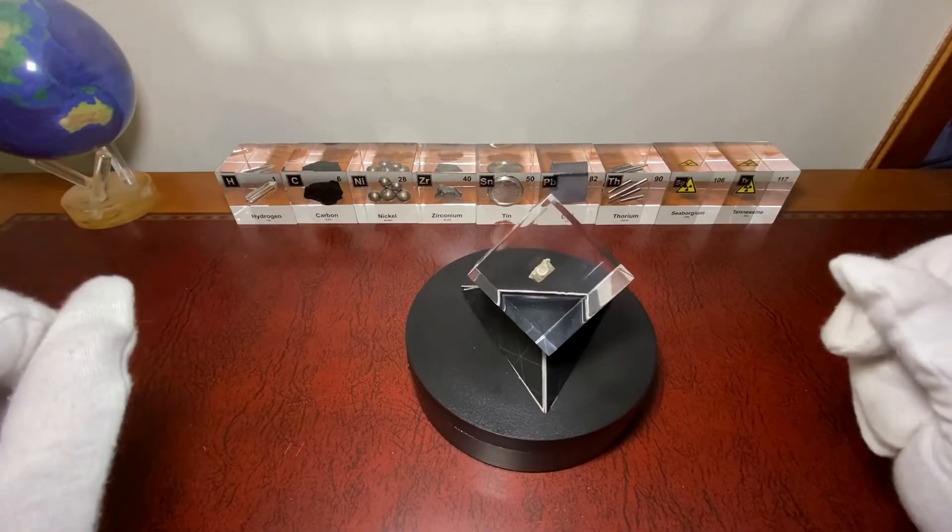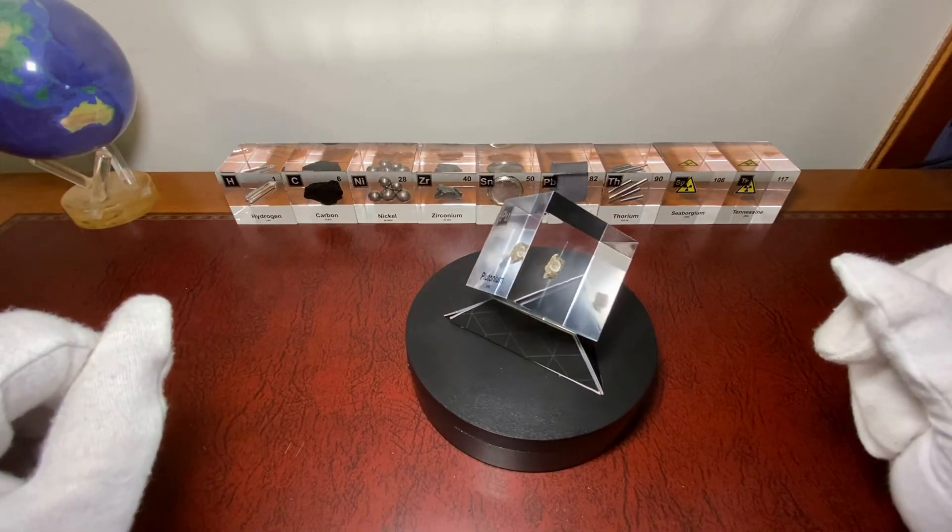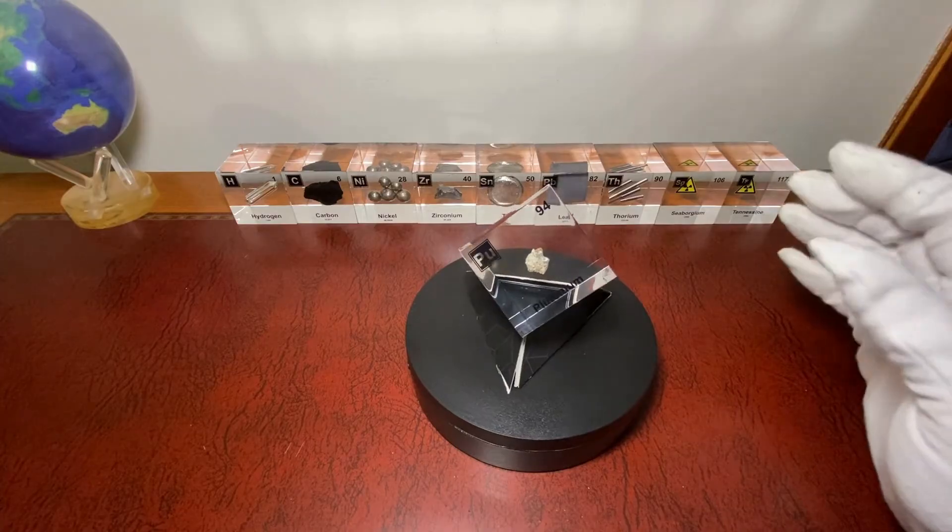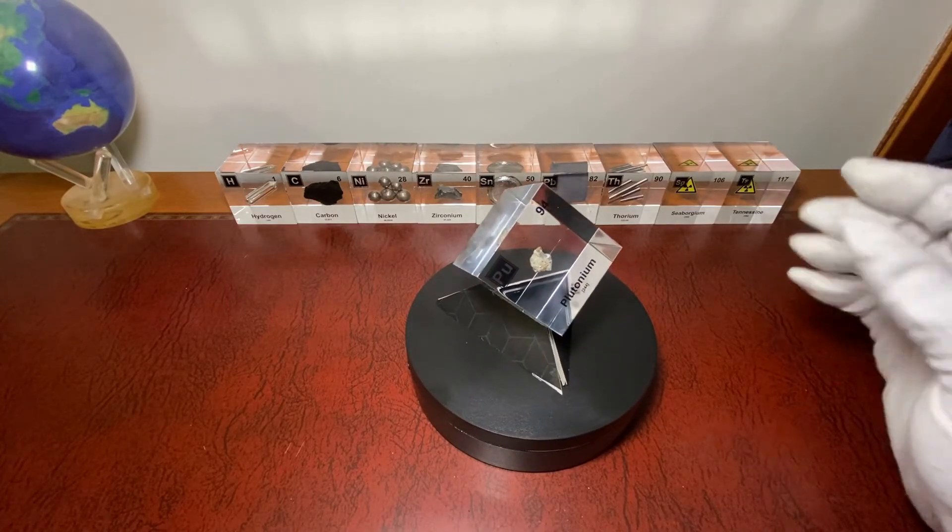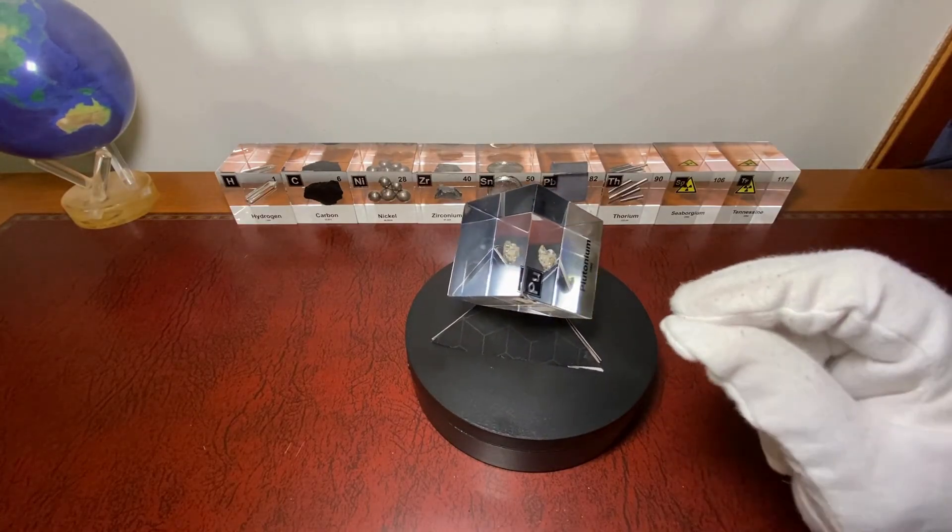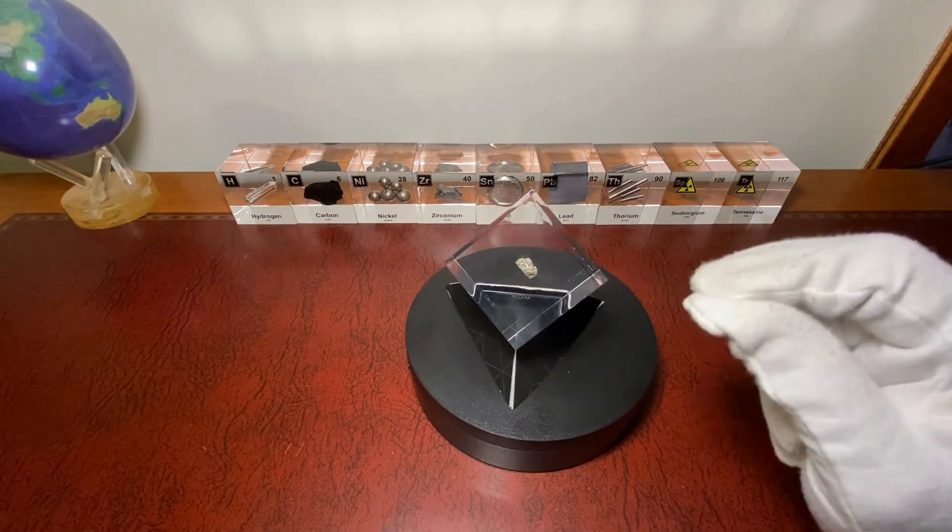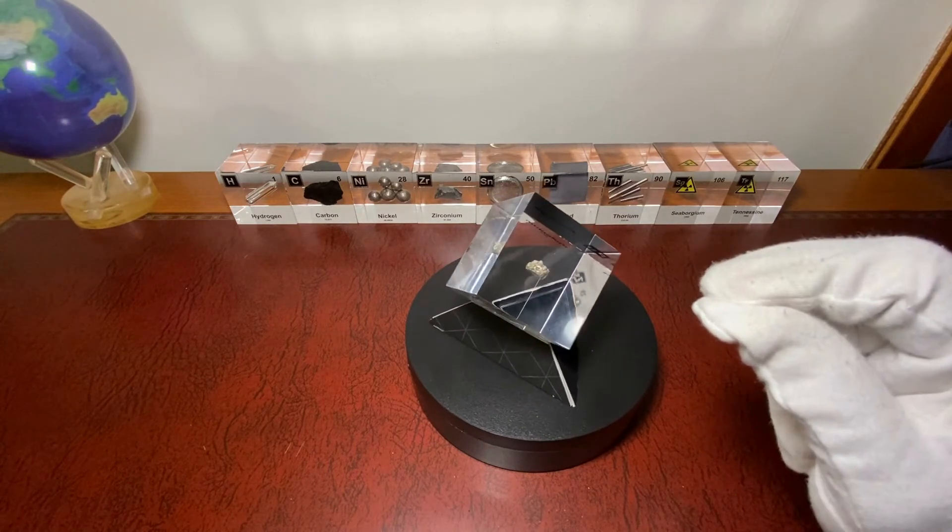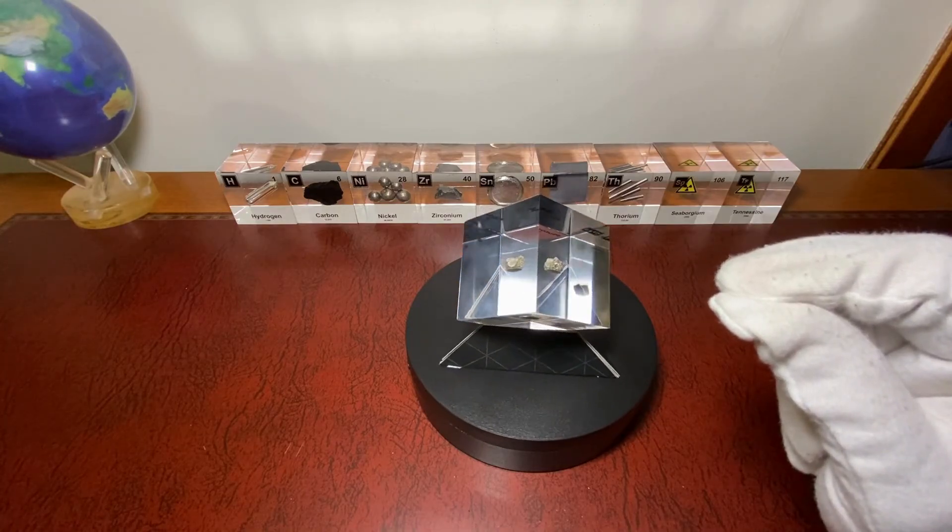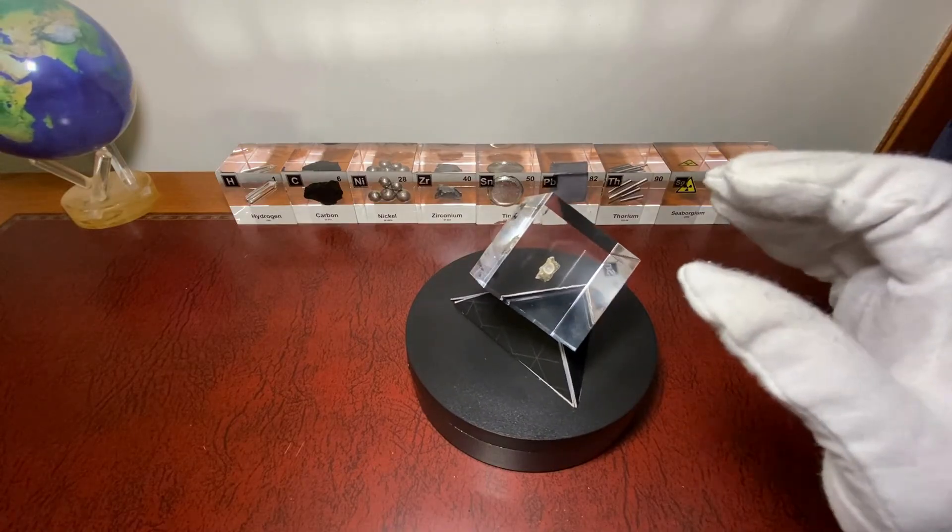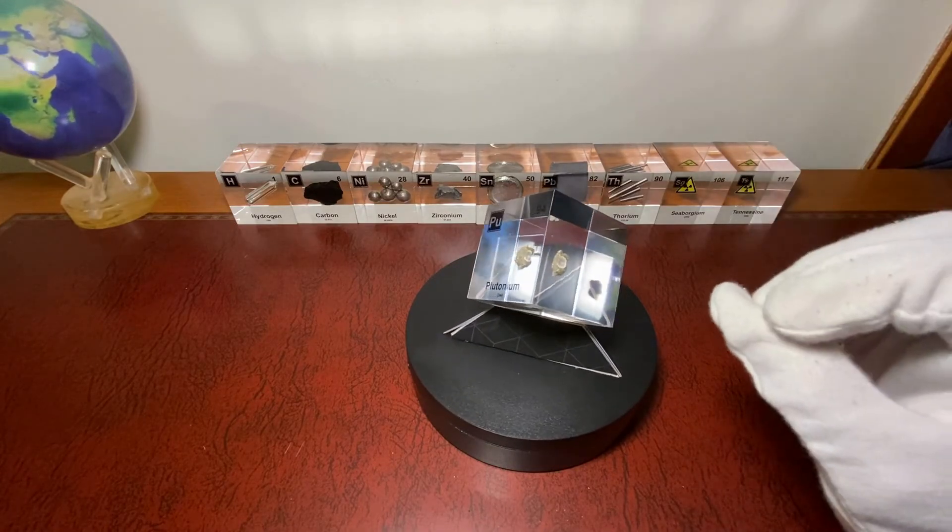Plutonium can also be used for fuel cells in nuclear reactors. For this, plutonium oxide is often used, and it is also possible to use carbides, nitrides, or carbon nitrides. Particularly isotopes plutonium-239 and 241 are suitable for this.